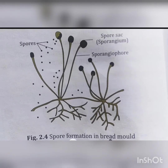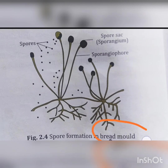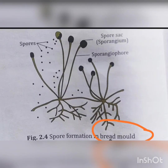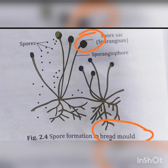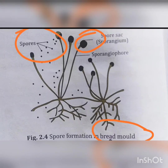Asexual reproduction by spore formation: organisms like bacteria, fungi, and mushroom reproduce asexually by spore formation. Moulds are a type of fungus that reproduce asexually by the process of spore formation. Each spore contains nuclear material and a small mass of cytoplasm enclosed within a tough outer wall called a spore sac or sporangium. They can resist unfavourable conditions. When the sporangium is mature and finds a suitable environment, it bursts, releasing the spores. Each spore germinates and gives rise to a new mould. The spores are carried along with the air and eventually land elsewhere.